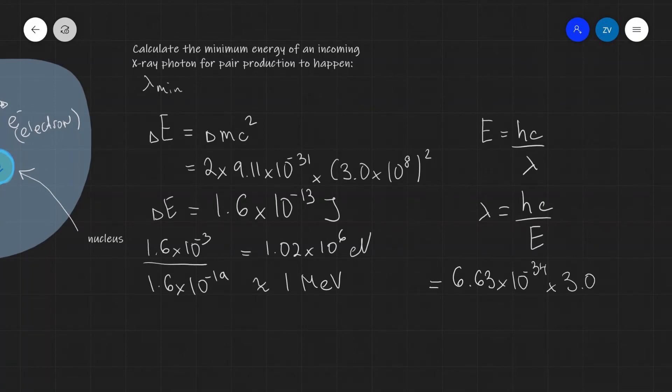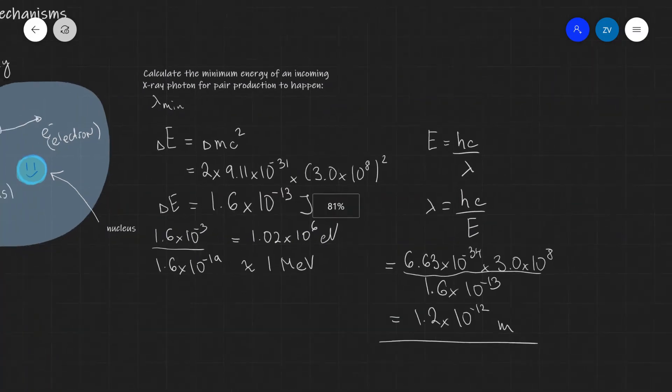Multiplied by the speed of light, which is 3.0 times 10 to the power of 8. Our energy in joules was approximately 1.6 times 10 to the power of minus 13 joules. And if we were to plug this into a calculator, we're going to get about 1.2 times 10 to the power of minus 12 meters. And this is the minimum wavelength required for an incoming X-ray to have for pair production to occur.